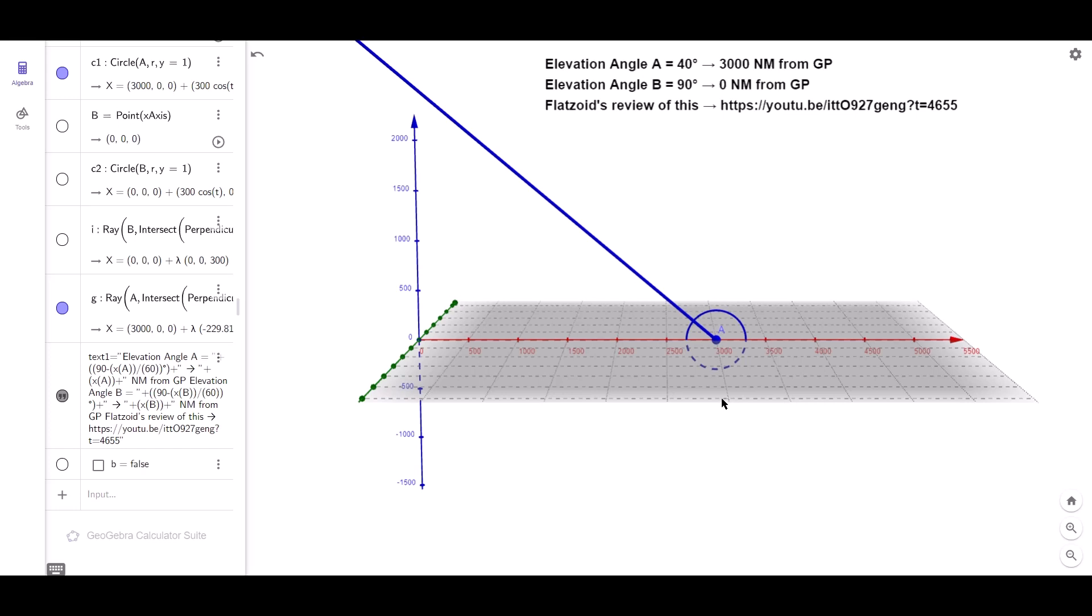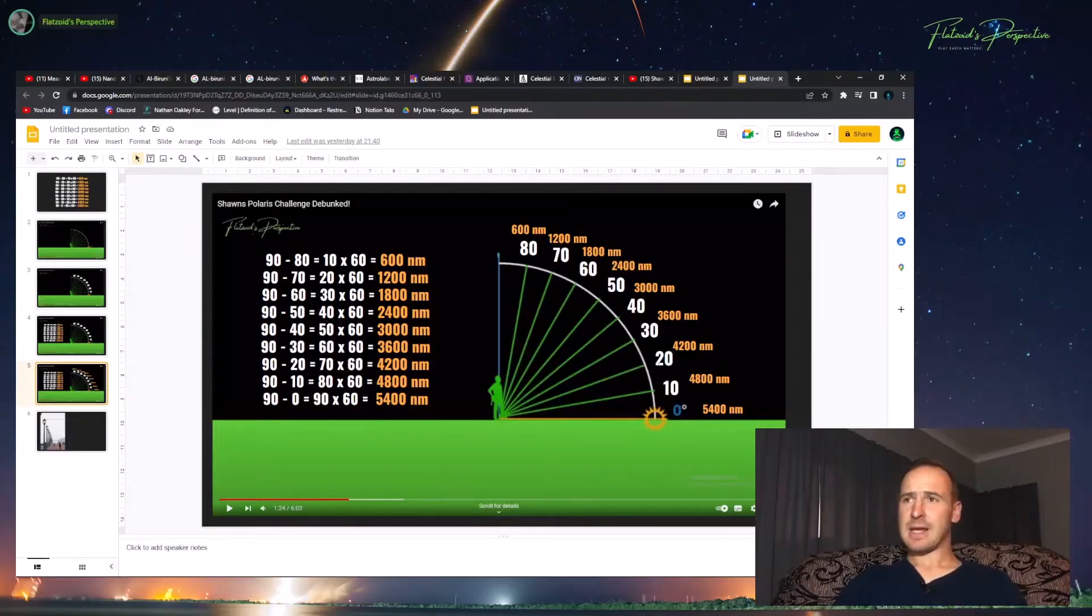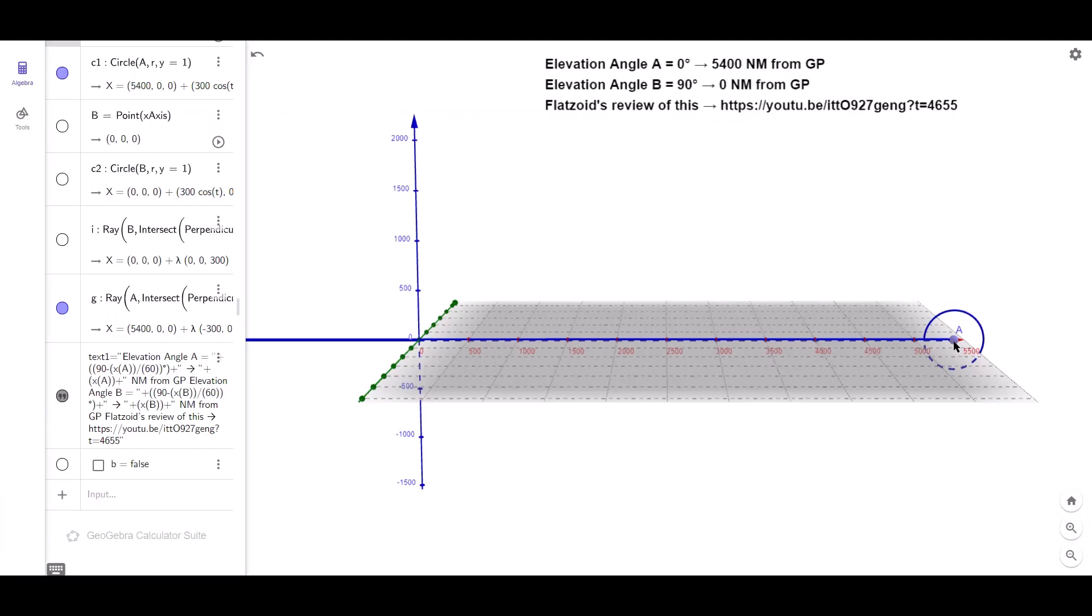This means a line of sight to Polaris is automatic, and Mike's angle to it is determined by his distance from the GP. At zero miles from the GP, the angle to Polaris will be 90 degrees, and at 5400 miles from the GP, the angle will be zero. That is how they got Polaris to the equator.